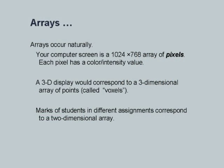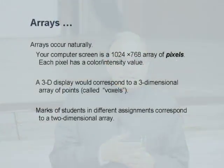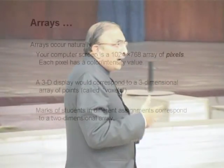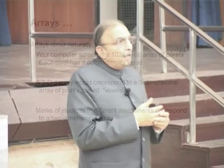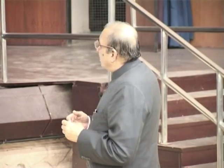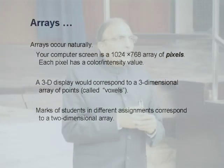Arrays occur naturally. For example, the computer screens in front of you in the labs consist of small points called picture elements or pixels, arranged in rows and columns, giving a feeling of a continuous picture because all columns simultaneously exhibit a color and intensity. Each pixel holds a value which is a color or intensity value. For a 3D image, an element would be called a voxel and would be determined by three different values, each representing one dimension. Take for example marks of students in different evaluations: quizzes, assignments, mid-sem, and end-sem.